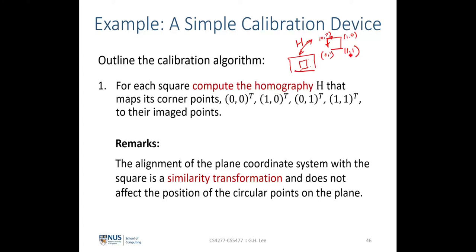The homography H relates the projection of the imaging device onto the image. We want to make use of this homography to project the circular points at the plane of infinity onto the image. The circular points i and j are invariant to similarity transformation, hence the absolute scale of the coordinate is not important. Given a set of four correspondences, we can easily compute the homography in a linear algorithm.